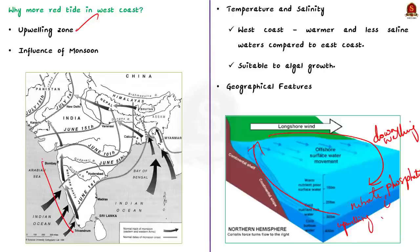The second important reason is the influence of monsoon. During the southwest monsoon, the west coast receives heavy rainfall which leads to the runoff of nutrients from the land into the sea. This further contributes to the nutrient load in coastal waters and favors algal blooms.